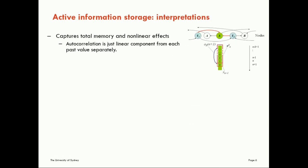So there are a number of interpretations that we can make of the active information storage here. Importantly, as an information theoretic measure, it's capturing a total amount of memory, including both linear and non-linear effects. The autocorrelation that you may be familiar with is just the linear component of the predictive contribution of each of these past values considered separately. So autocorrelation will tell us the relationship of this previous value to that one, the previous value back to that one, and so on.